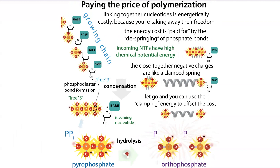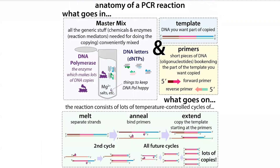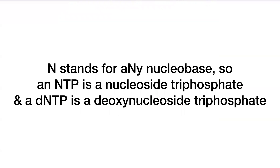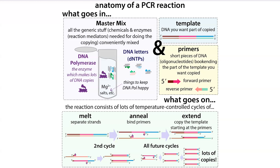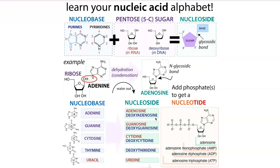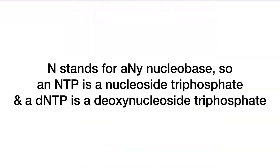When we're doing something like PCR, where we're trying to piece together DNA letters in a tube to copy DNA, we need to add dNTPs. The N stands for any nucleobase, so an NTP is just a nucleoside triphosphate, and a dNTP is a deoxynucleoside triphosphate. When doing PCR, we add a mixture of all dNTPs: deoxyadenosine, deoxyguanosine, deoxycytidine, and deoxythymidine. The N in dNTPs means it could be any of those nucleobases.